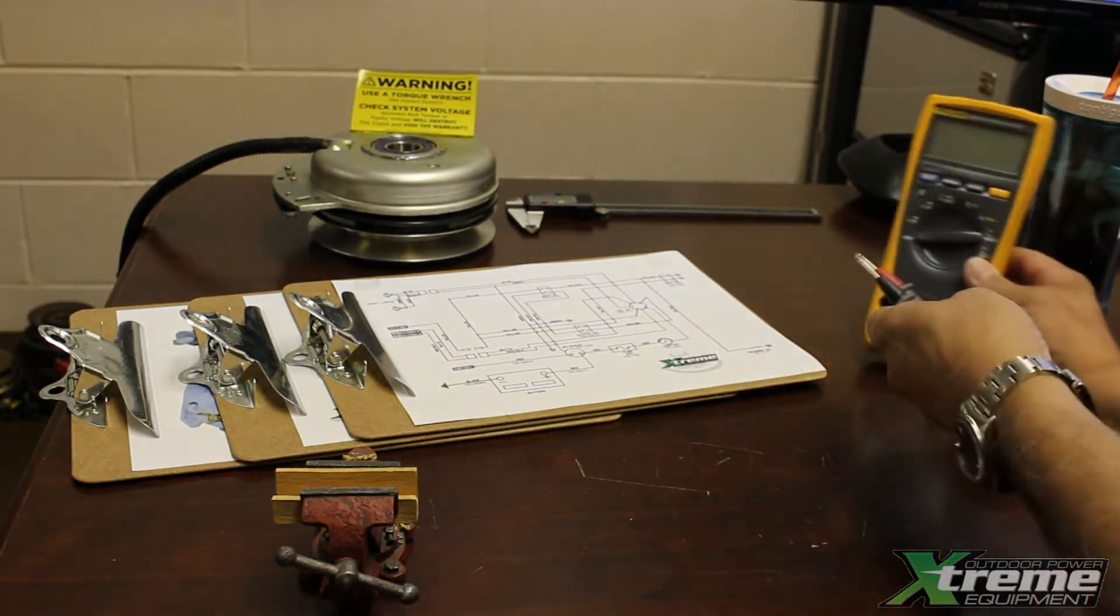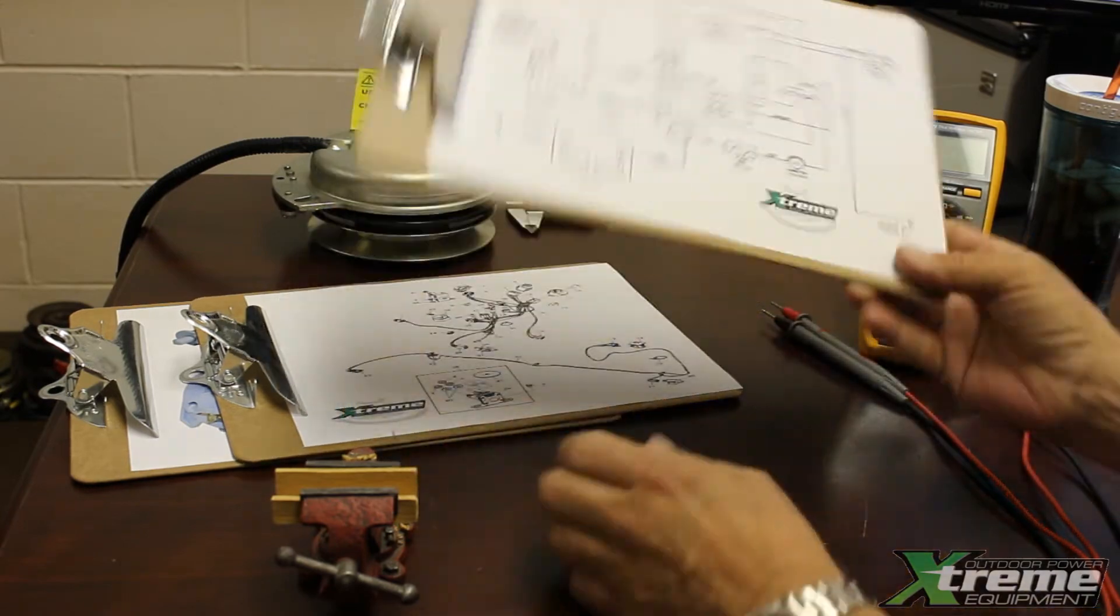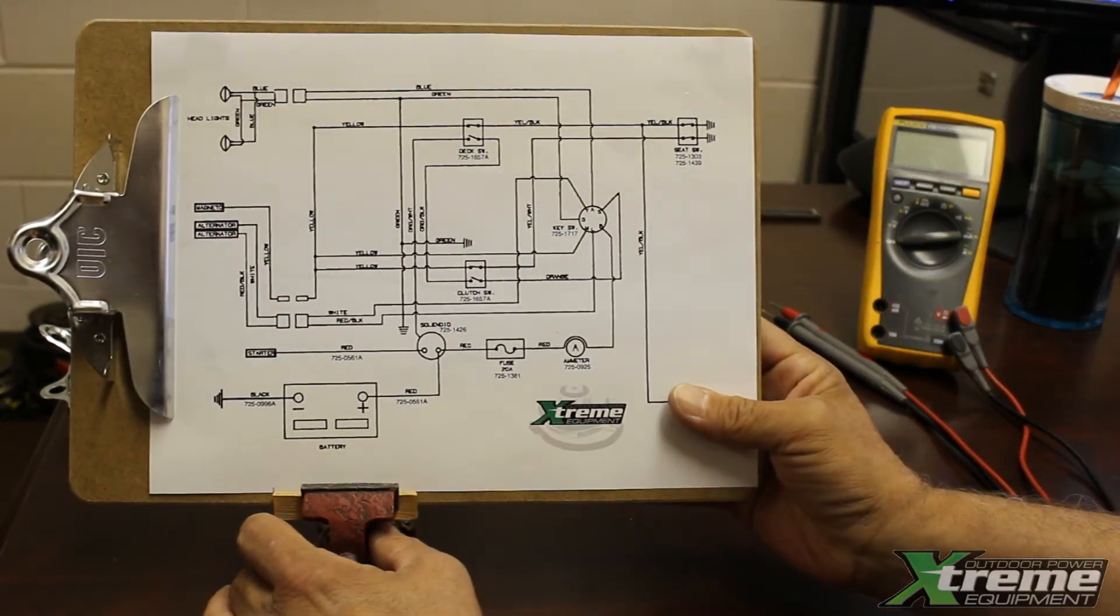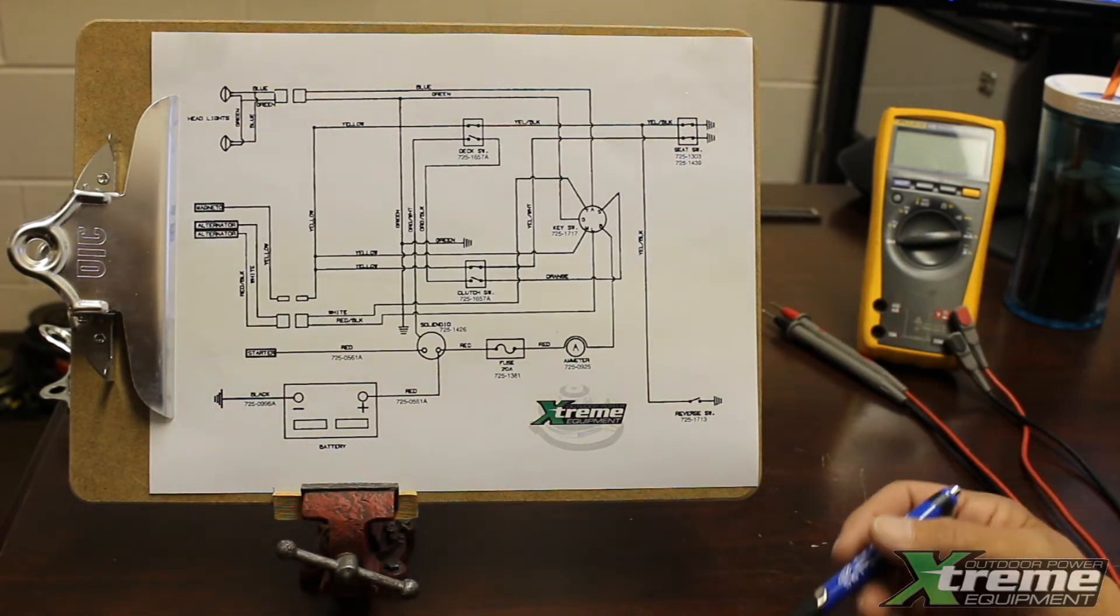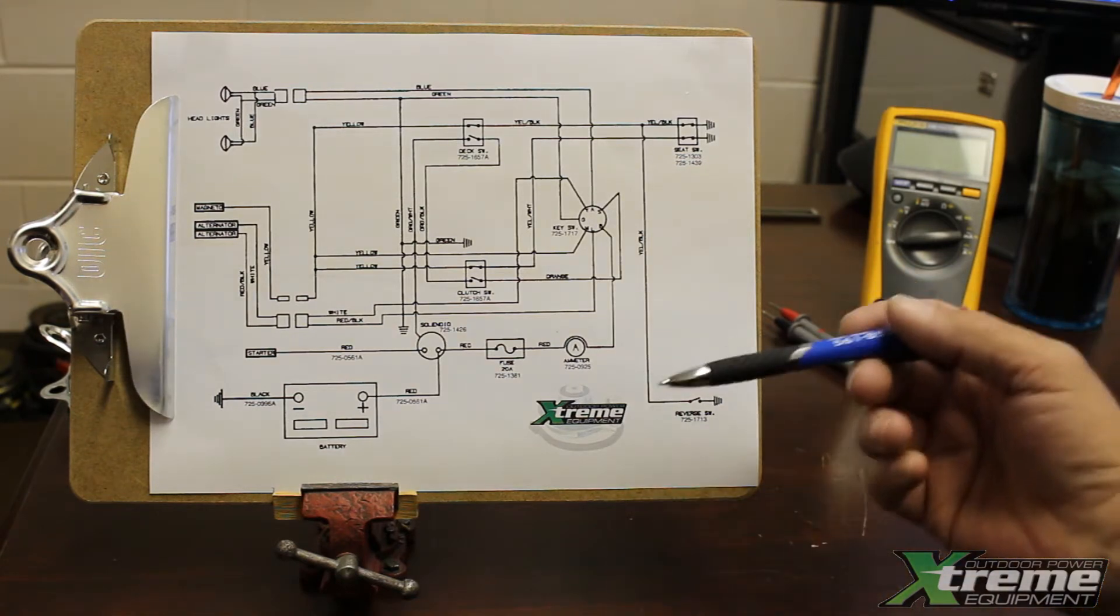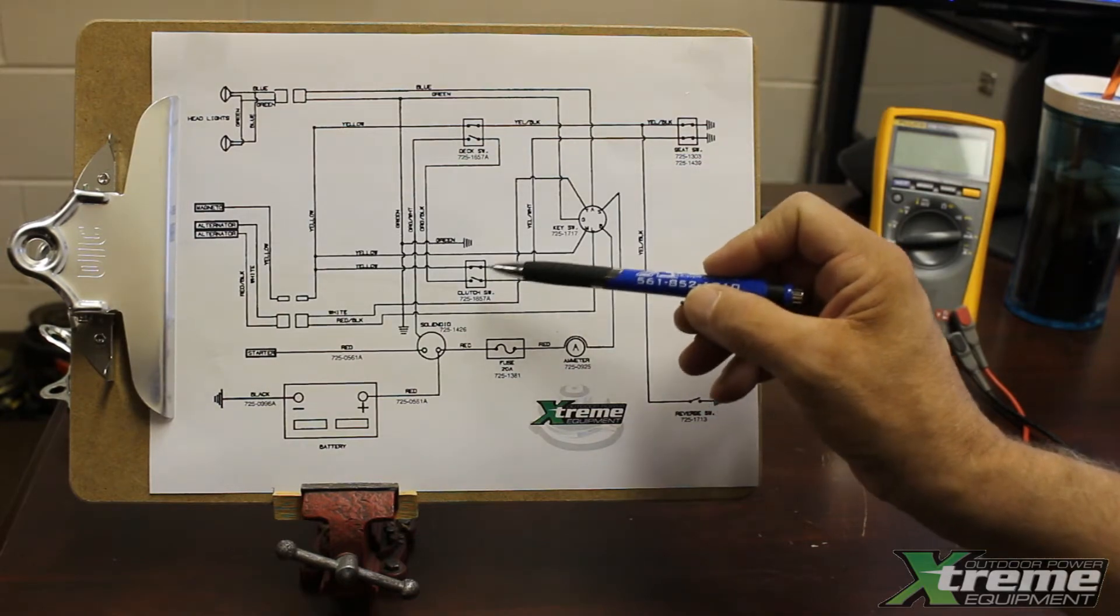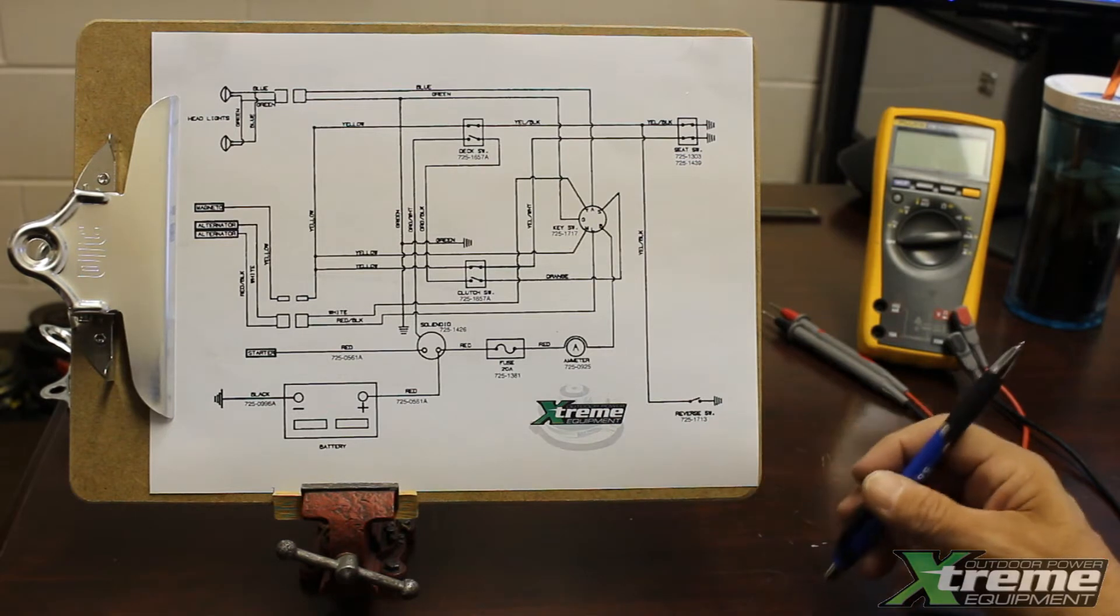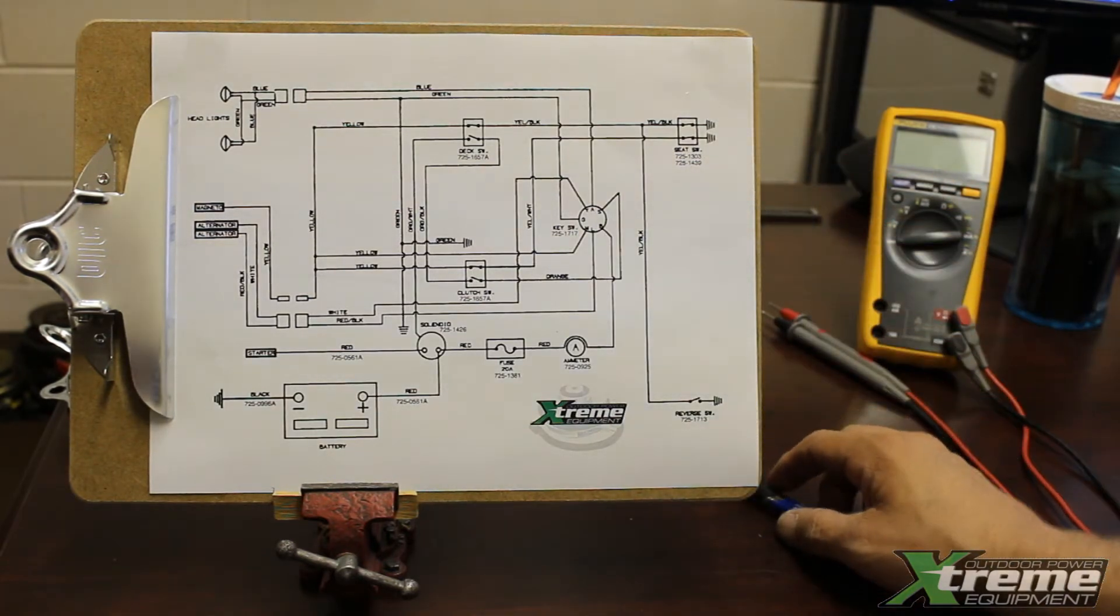It's important to have the schematic, and at that time we will start to study what's involved with that particular mower. You can see here is the clutch switch, and in this case it runs through the deck switch and the seat switch up here and so on and so forth.